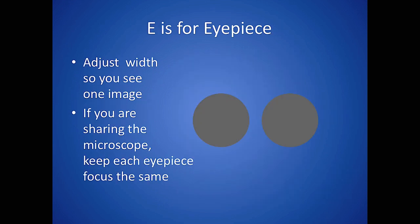E is for eyepiece. When you're starting to use a microscope, you might find it easier to use just one eye, but with practice you should be able to use both eyes. It's very important that when you're looking down the microscope you only see one image. Move the eyepieces closer together until you find the point where you're seeing only one image.